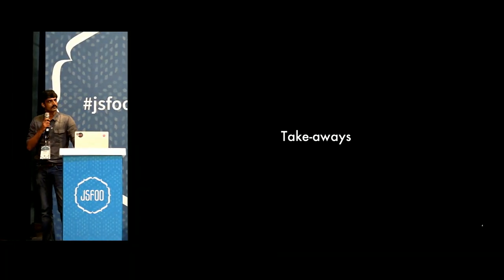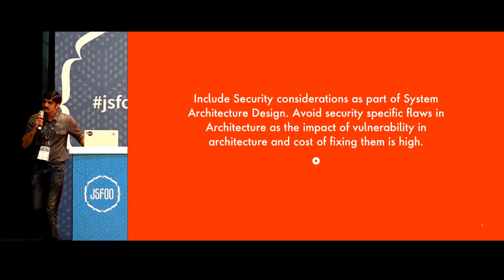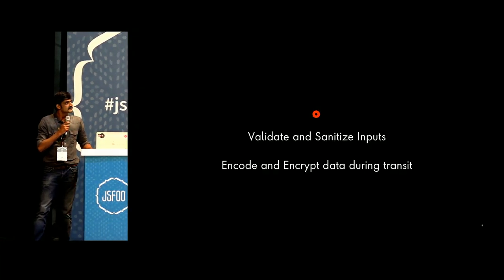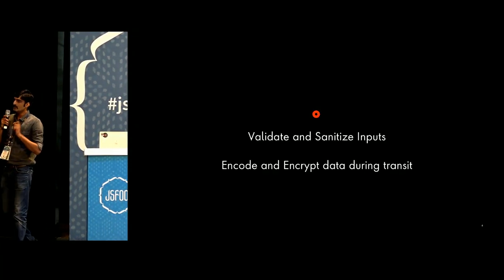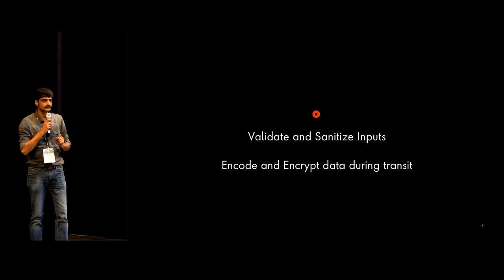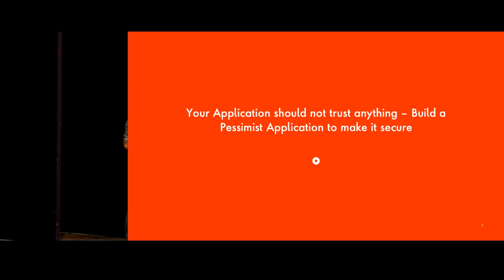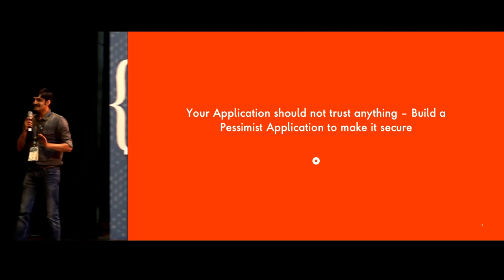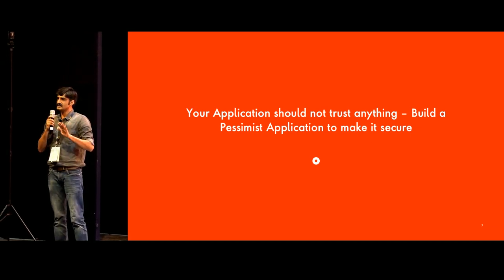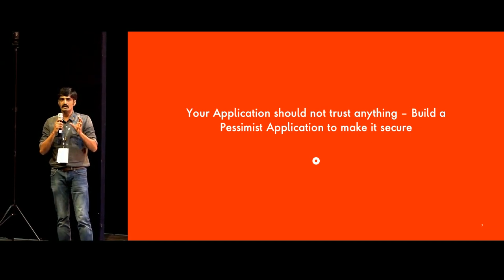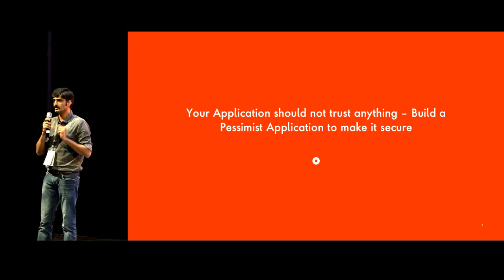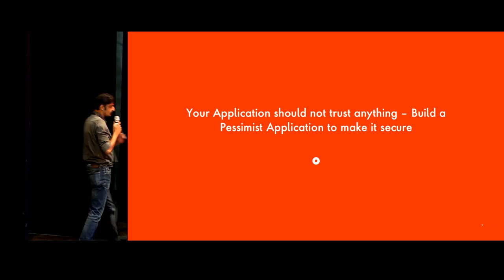The takeaway is: you should have a checklist to follow. The checklist should include: consider security as part of your architectural discussion and design. Second, validate each and every input, sanitize your input, encode them, encrypt them. Do not trust any data or anybody. Be pessimistic about building your application. You should be aware of what input you're getting and what output is expected, and do not allow any other output or input.